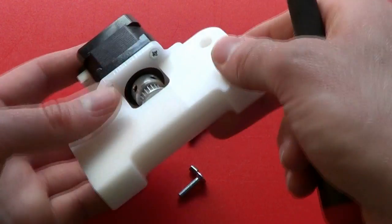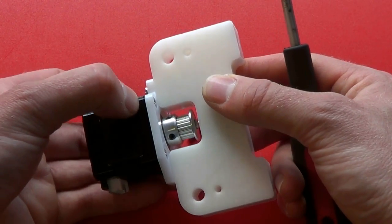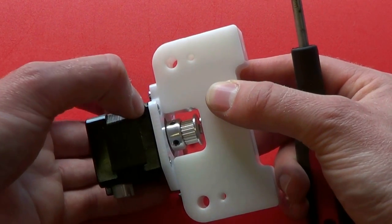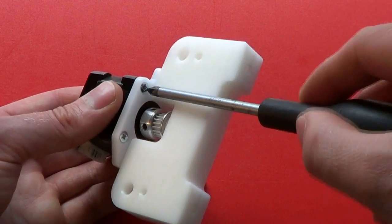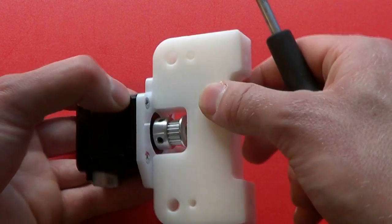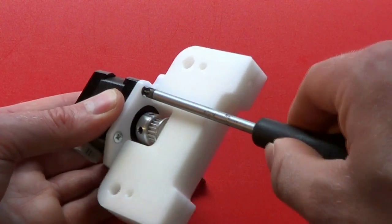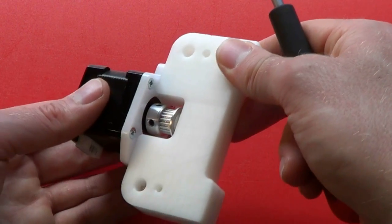Be careful when tightening because there's only around 3mm of thread depth in the motor face and if you over-tighten you may strip the threads. Just tighten them enough to hold the motor securely.